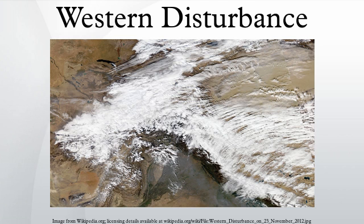Some of the western disturbances bring well-distributed and good rainfall, while some pass with negligible rain or sometimes no rain. The western disturbance affects day-to-day weather of northwest India especially during winter season. It is usually associated with cloudy sky, higher night temperatures, and unusual rain. Over the Indo-Gangetic plains, it brings cold wave conditions and occasionally dense fog and cold day conditions. These conditions remain stable until disturbed by another western disturbance.